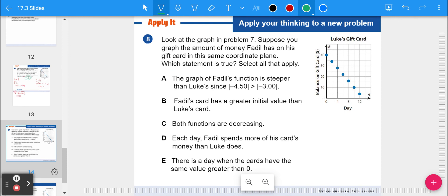So look at the graph from problem seven. Suppose you graph the amount of money Fidel has on his gift card on the same coordinate plane. Which statement is true? Select all that apply. Well, let's look at this. It says the graph of Fidel's function is steeper than Luke's since negative 450 is greater than the absolute value of three. That is true because it's steeper because Fidel's is actually losing more money faster. B, Fidel's card has a greater initial value than Luke's card. Well, Fidel's was 50. That's true. Luke's was 40. Both functions are decreasing. That is also true. We're both going down in amounts. Each day Fidel spends more on his card's money than Luke does. That is true.